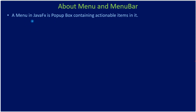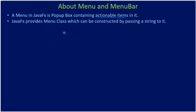A menu in JavaFX is a pop-up box containing actionable items. JavaFX provides a Menu class, which can be constructed by passing a string to it. The string will act as a caption for the menu — it will be displayed on the menu label, and once you click on it, the menu pop-up will open.